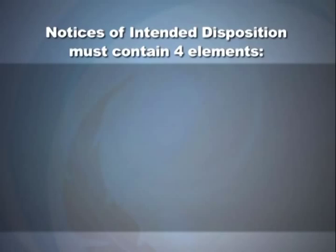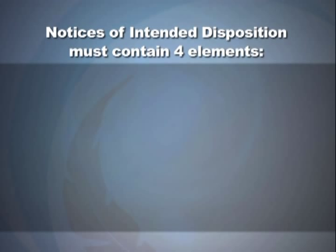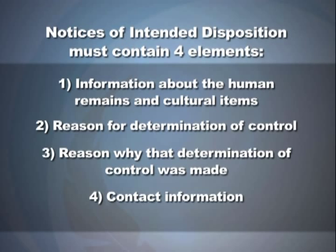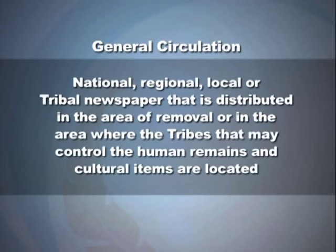A notice of intended disposition must contain four elements: information about the human remains and cultural items found at the site, the determination of control, the reason why that determination was made, and the contact information for the federal agency. Notices of intended disposition must be published in a newspaper of general circulation — national, regional, local, or tribal — distributed in the area of removal or where the relevant tribes are located.